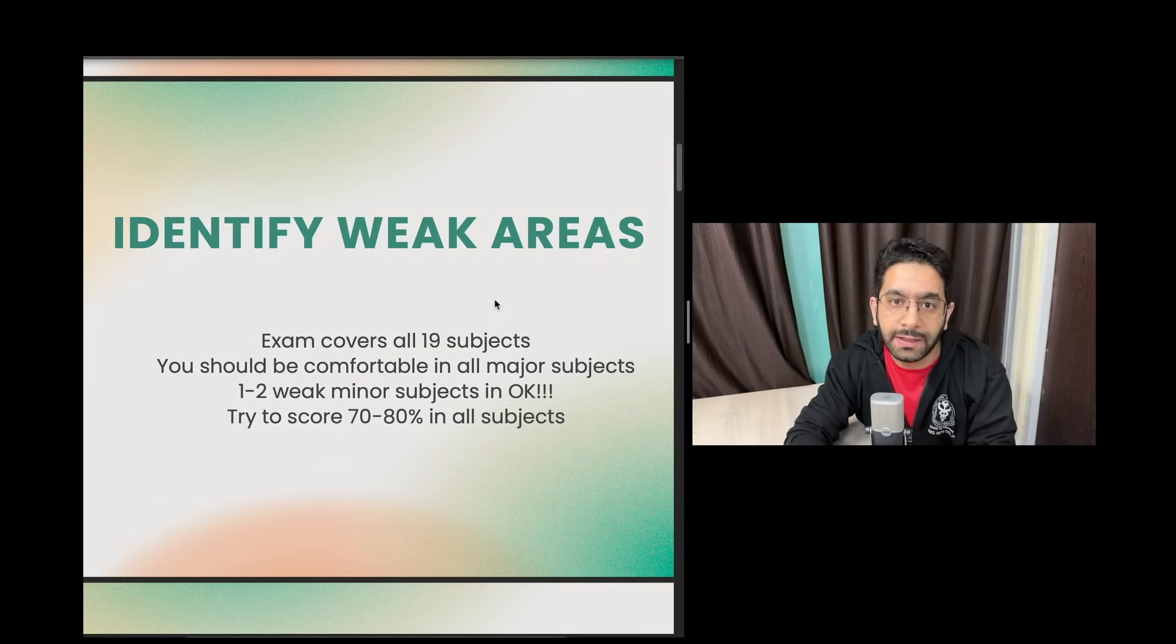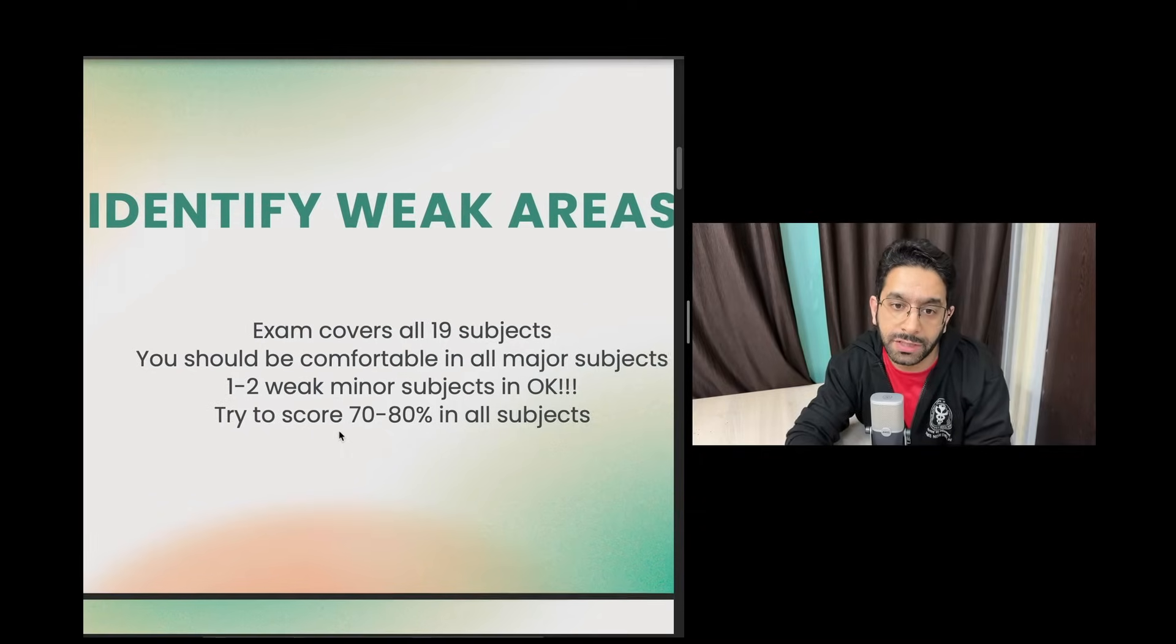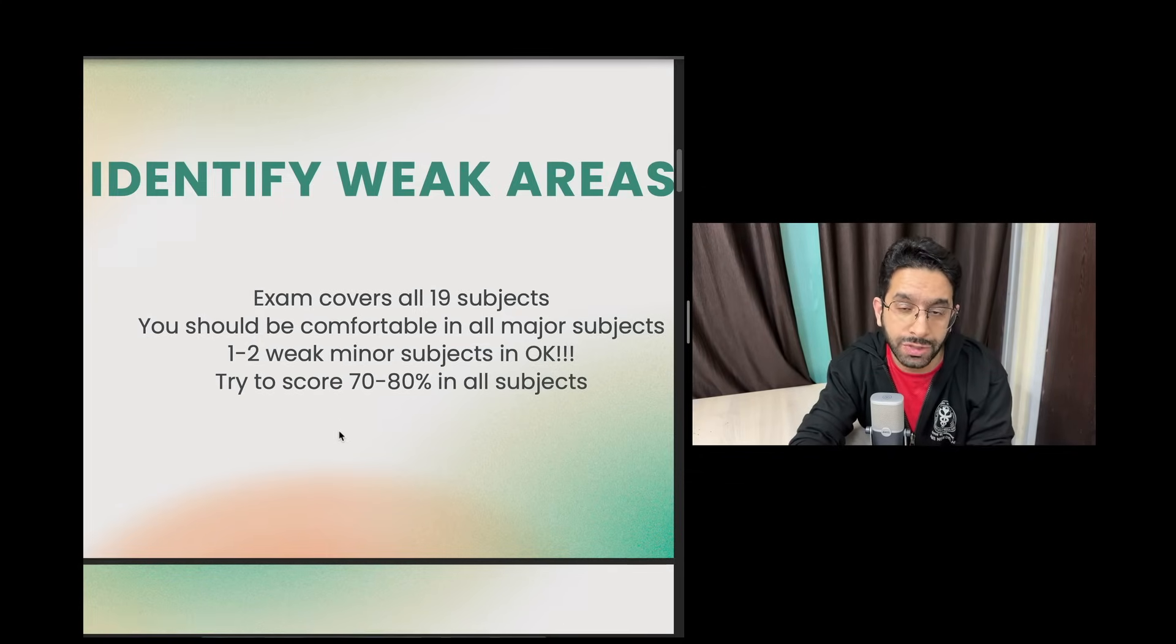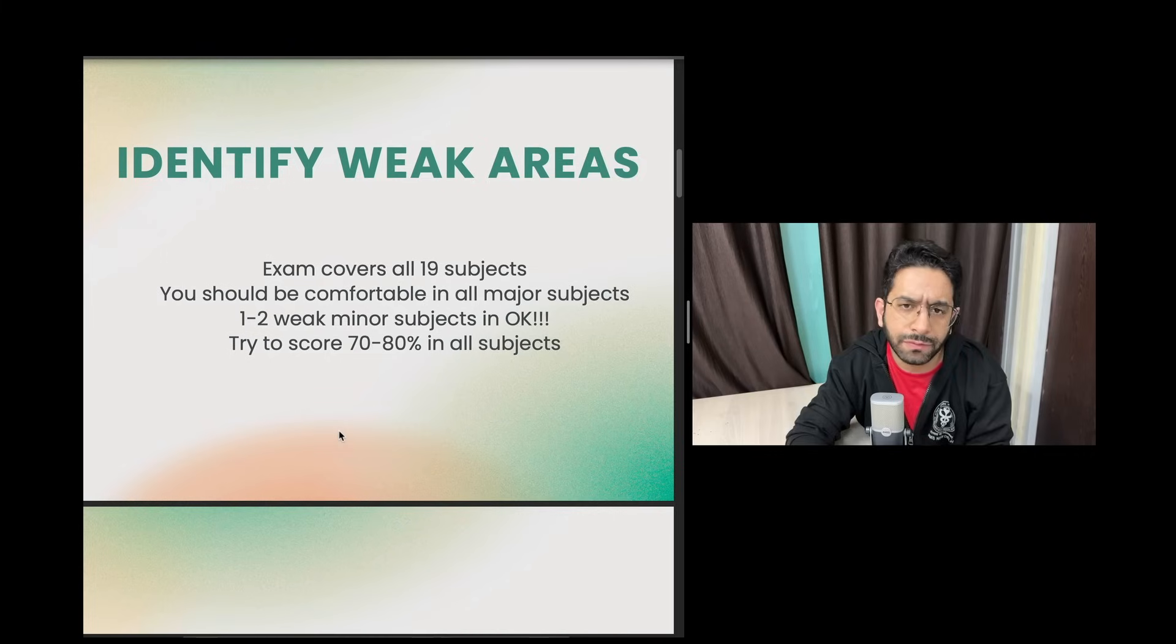It's okay to be weak in maybe two to three minor subjects. Those subjects you can just cover the previous questions and hope that with that knowledge you are able to get at least 50% of the questions from those weak subjects. But you should try to score 70 to 80% in almost all subjects. The reason I'm highlighting this is that if your Orthopedics is weak, I don't want you to spend seven days understanding Orthopedics. If you have a couple of weak areas, it's okay to read just the previous questions and hope that you solve a few questions from that subject.